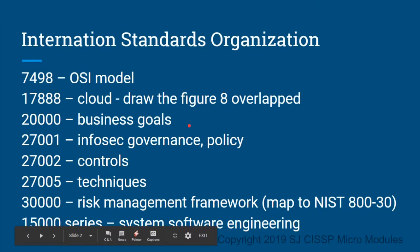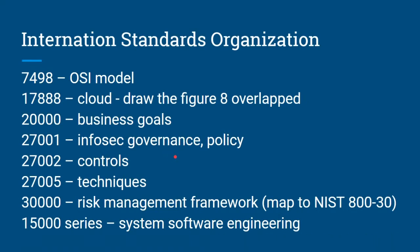ISO 20,000 is the business goals. 27,001 is the governance or the policy for information security, and 27,002 covers controls — security controls.